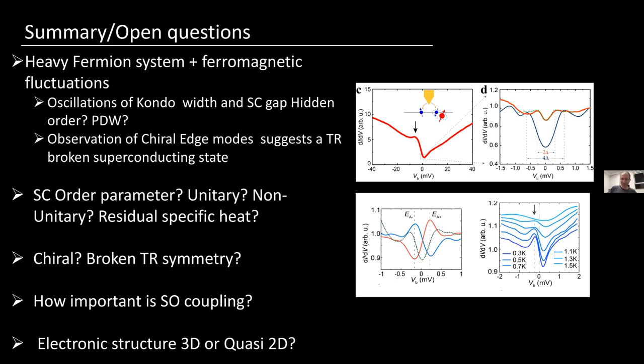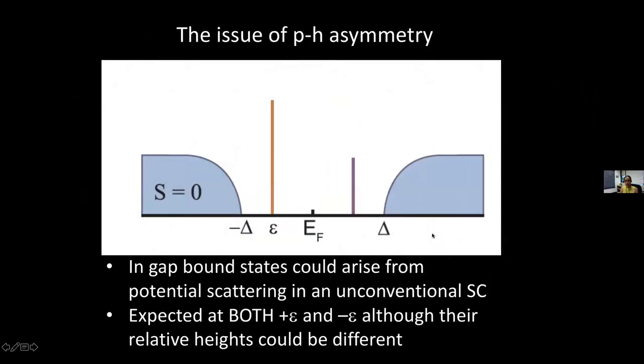Thank you very much. There's a question from Yishuan: regarding the edge mode you touched on toward the end — it has a strange shape that is locally particle-hole asymmetric. The curiosity is noted, but furthermore, the fact that the dip and hump are opposite for the two edges — how should we understand that as related to opposite chirality of the two edge modes? So we tried to understand this line shape and came up with one scenario.